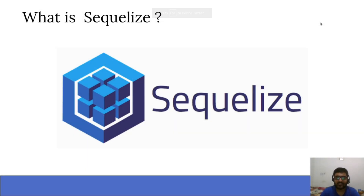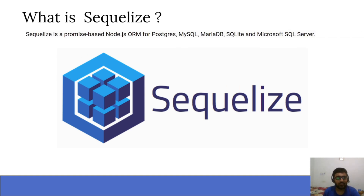In the previous lecture, we studied what is an ORM. Now it's time to understand what is Sequelize. As per the documentation, Sequelize is a promise-based Node.js ORM for Postgres, MySQL, MariaDB, SQLite, and Microsoft SQL Server.